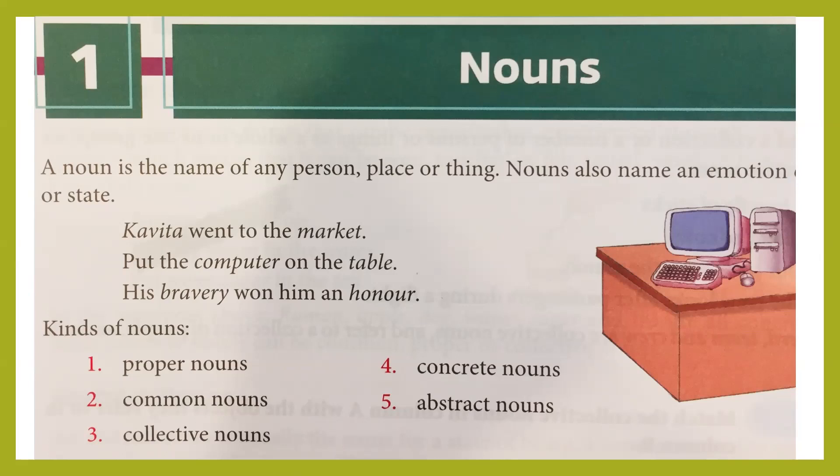Topic number 1 is nouns. Students, from last so many years we are studying this topic, so we are only going to revise it in 7th standard. A noun is the name of any person, place or thing. Nouns also name an emotion or a state. Noun is the first part of speech and is a name used for a person, place or thing.